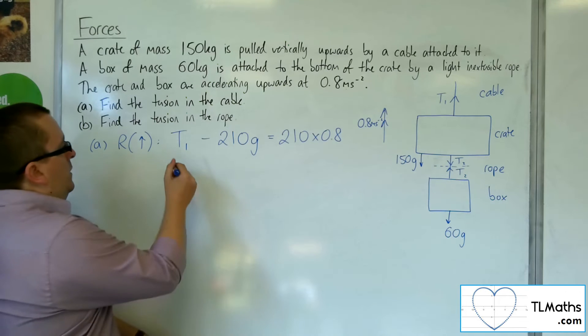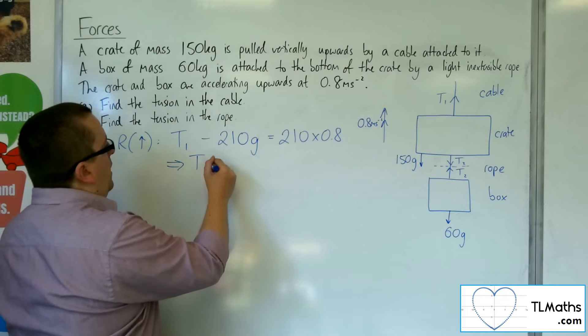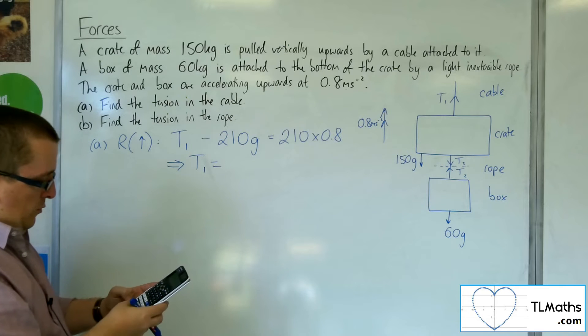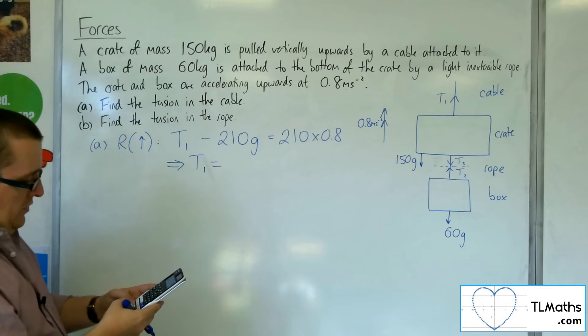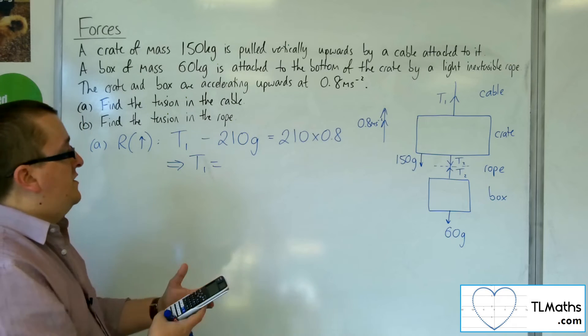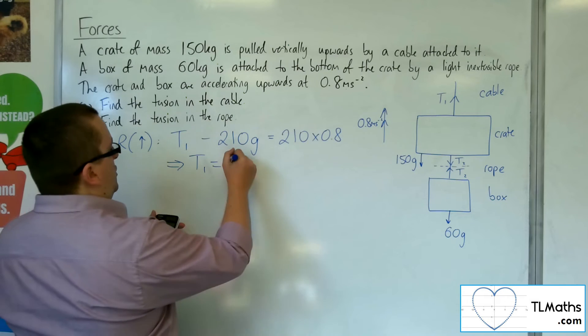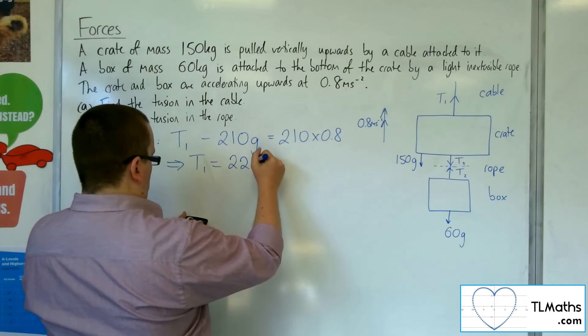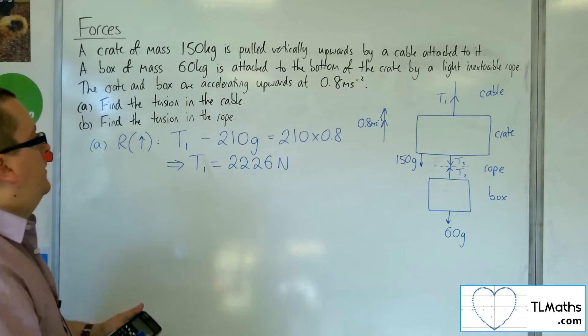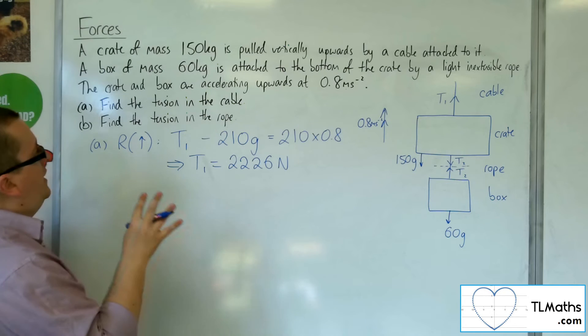So T1 is 210 times the 0.8 plus 210 times 9.8. We're going to take gravity as 9.8, and I get 2,226 newtons. So that is the tension in the cable.